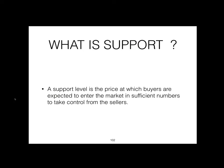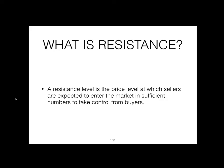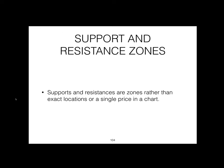A support level is the price at which buyers are expected to enter the market in sufficient numbers to take control from the sellers. A resistance level is the price level at which sellers are expected to enter the market in sufficient numbers to take control from buyers. Remember that supports and resistances are zones rather than exact locations or a single price in a chart.